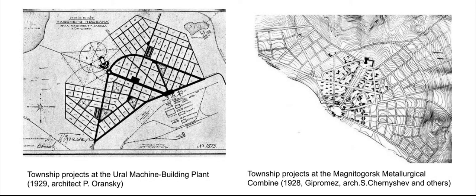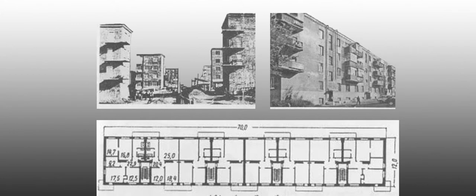The traditional compositional orientation of the settlement towards the industrial complex was maintained along with the beam pattern layout. It was common practice to orient the main streets towards the plant square. This is demonstrated by settlements designed for the Ural car building factory, as well as the Magnitogorsk steel plant. This was an ideological concept which shaped the lives of residents. Though it proved unpopular, industrialization allowed for the construction of similar buildings en masse.